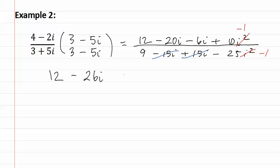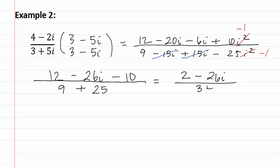Now we have twelve. Combining like terms gives us negative twenty-six i minus ten all over nine plus twenty-five. We now combine like terms with the twelve and the ten to give us two minus twenty-six i over thirty-four.